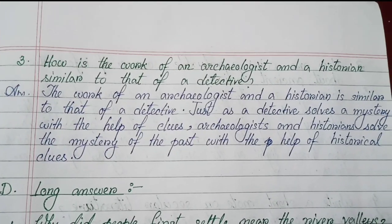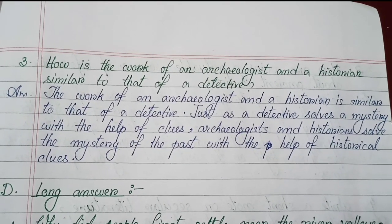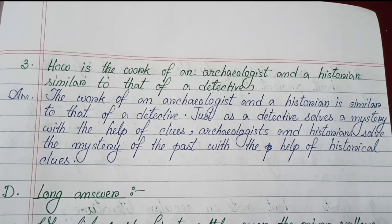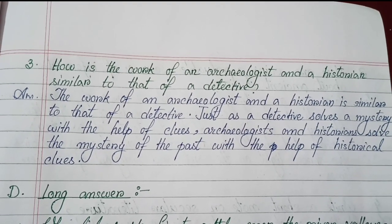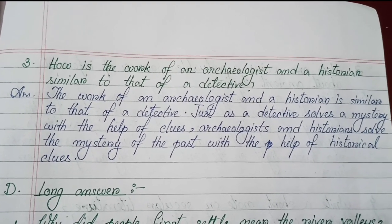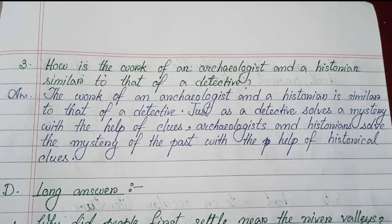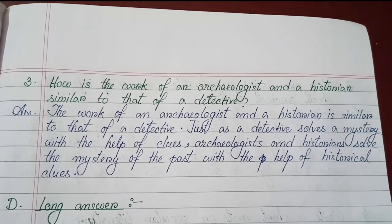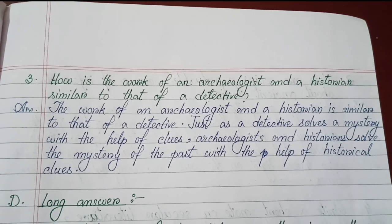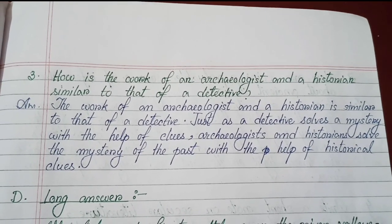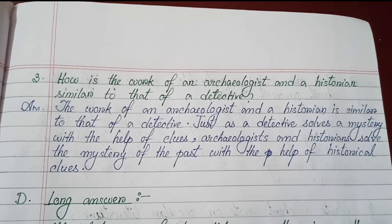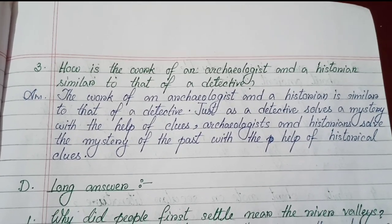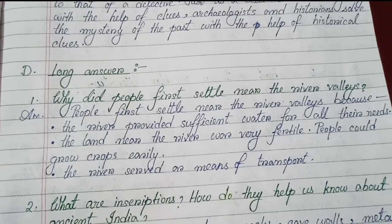Number three: How is the work of an archaeologist and a historian similar to that of a detective? The work of an archaeologist and a historian is similar to that of a detective. Just as a detective solves a mystery with the help of clues, archaeologists and historians solve the mystery of the past with the help of historical clues.